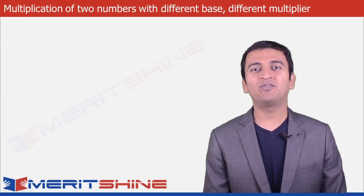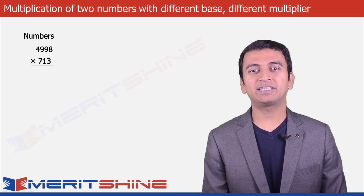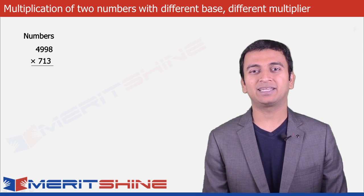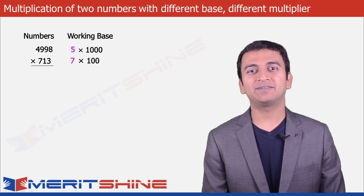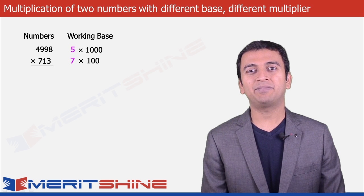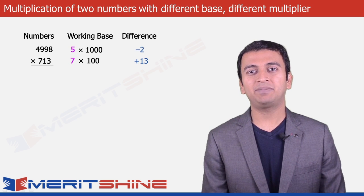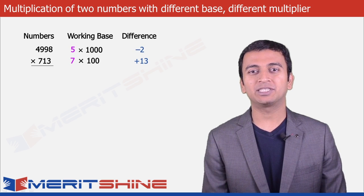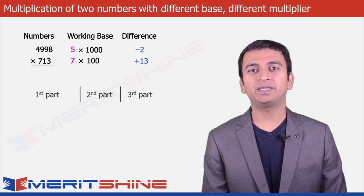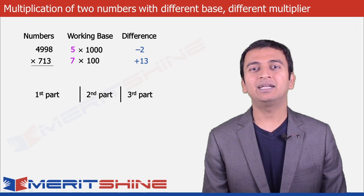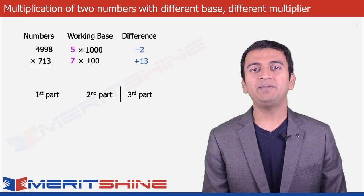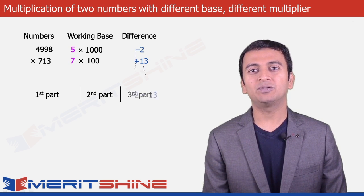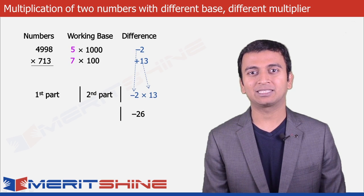Let us take 4998 into 713 as an example. Here our working bases would be 5 into 1000 and 7 into 100. The differences would be minus 2 and plus 13. We can now proceed to write down our answer in three parts. The third part would be minus 2 into plus 13, giving minus 26.